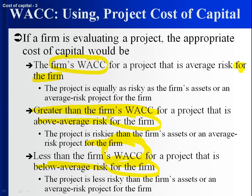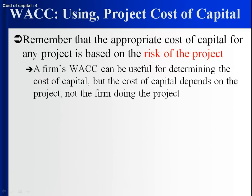For a particular firm doing a project, that firm's weighted average cost of capital serves as a nice benchmark. You can compare the risk of the project to the risk of what the firm's doing, and it puts things on a scale. Remember, the risk of the project — that's why it's in red — determines the appropriate cost of capital for a project. The weighted average cost of capital for a firm is really useful and helpful for figuring out the appropriate cost of capital for a project. But the cost of capital for the project depends on the risk of the project, not the firm doing the project. Very important: the project determines the cost of capital for the project.